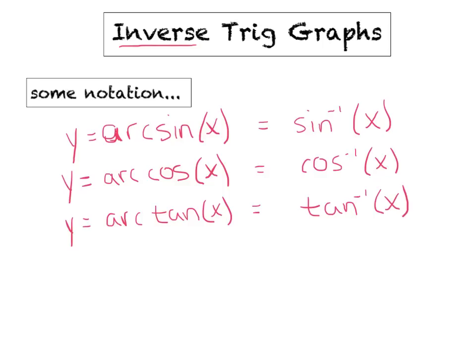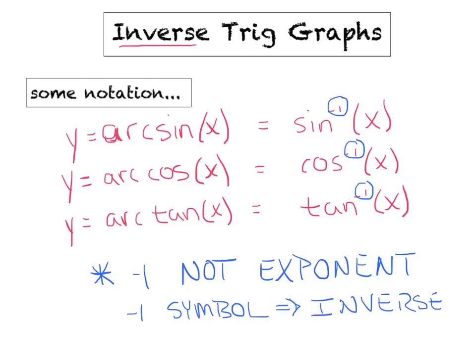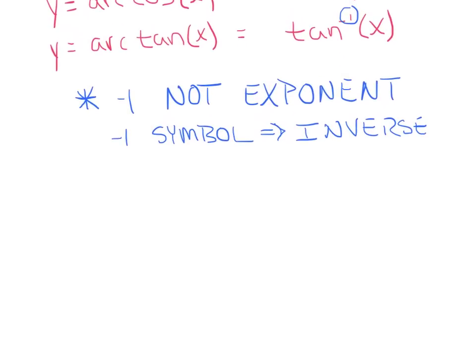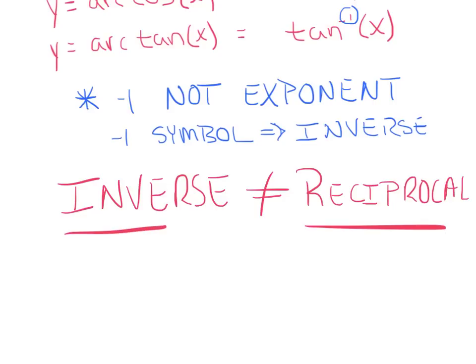A couple of key components here: when you see this negative 1 on these functions, that negative 1 is not an exponent. Every time you see a negative 1 up there on these trig functions, assume it's not an exponent. That negative 1 is a symbol that means inverse. And the other thing I want to really emphasize is that an inverse is not the same thing as a reciprocal — these two words are not synonymous; they're entirely different.